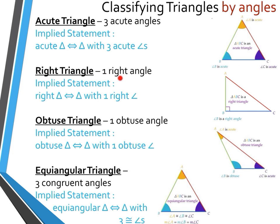The next classification is the right triangle, which has one right angle, as indicated by the box in the corner. An obtuse triangle has one obtuse angle — you can see the obtuse angle here at angle B, which is greater than 90 degrees. That means the other two angles must be acute; there's no way to have more than one obtuse angle in a triangle. Implied statement: obtuse triangle implies triangle with one obtuse angle.